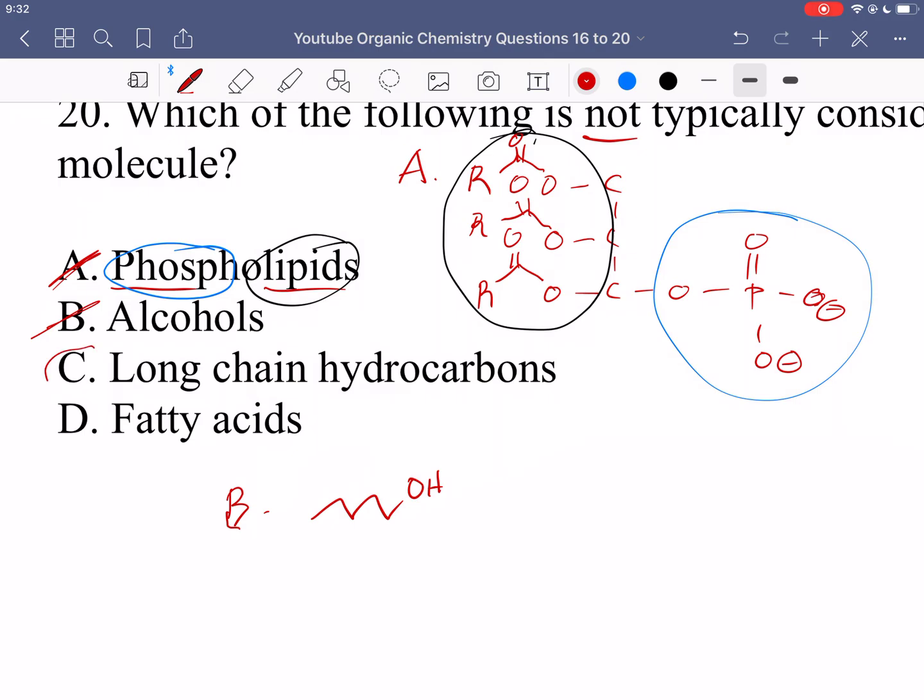And then C is not. So in C, we're talking about long chain hydrocarbon and hydrocarbon just means that we have just hydrogens and carbons. So in this molecule, we don't have any polar group. We don't have like an alcohol, a phosphate, anything like that. We just have carbons and hydrogens. Therefore, the one in option C, a long chain hydrocarbon is just non-polar.